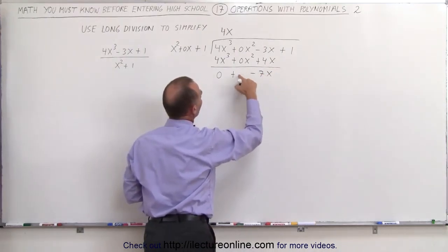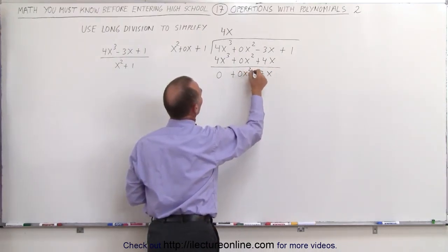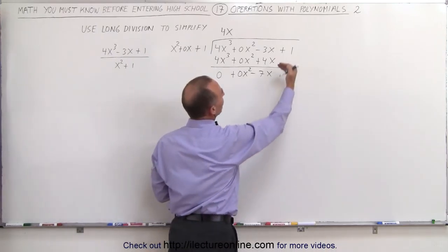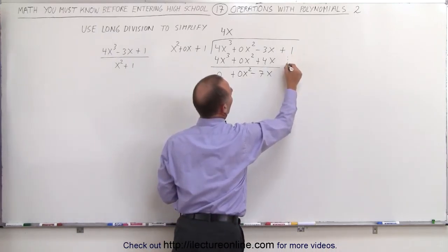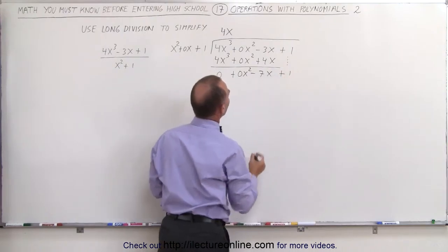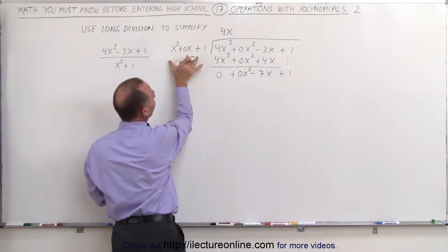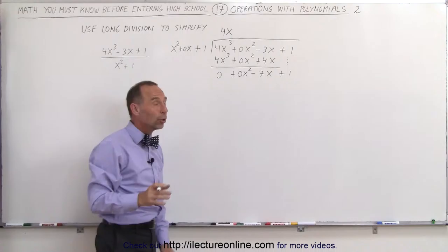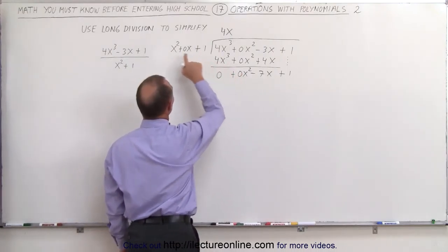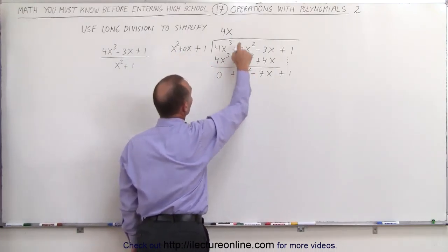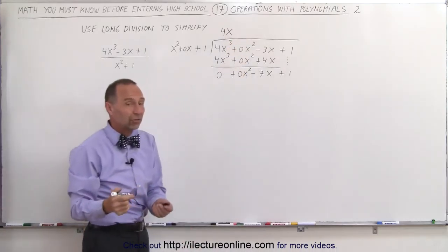Now notice, I'll go ahead and write 0x² here to make it easier. Next step we do is we drop the next term down. So we drop this down, we write plus 1, and now we're going to divide this into here. Now notice that this is a 0x², so x² goes into 0x², 0 times, or you can ask yourself...